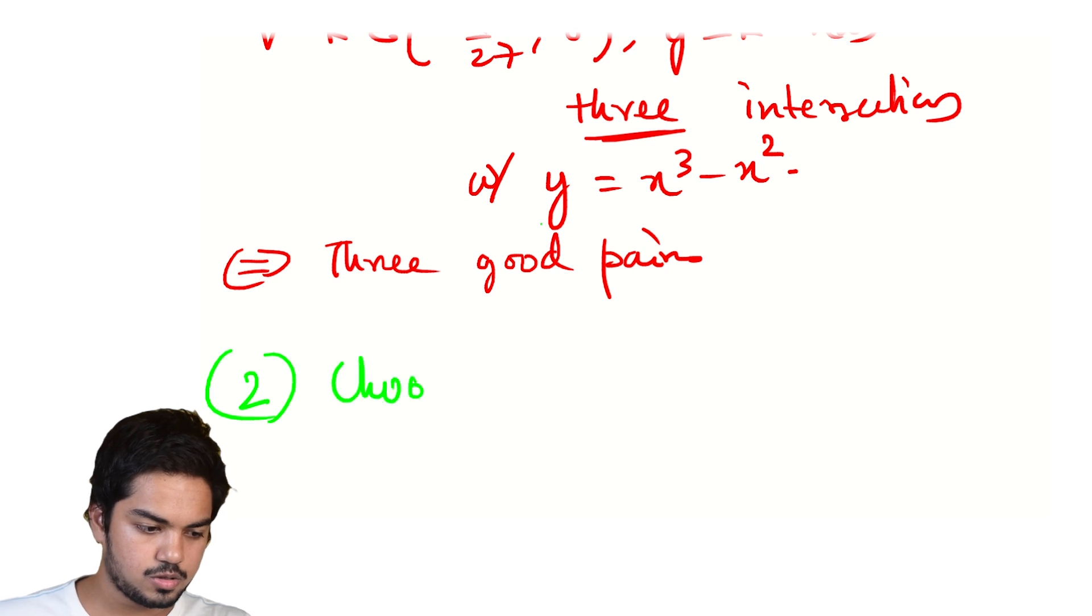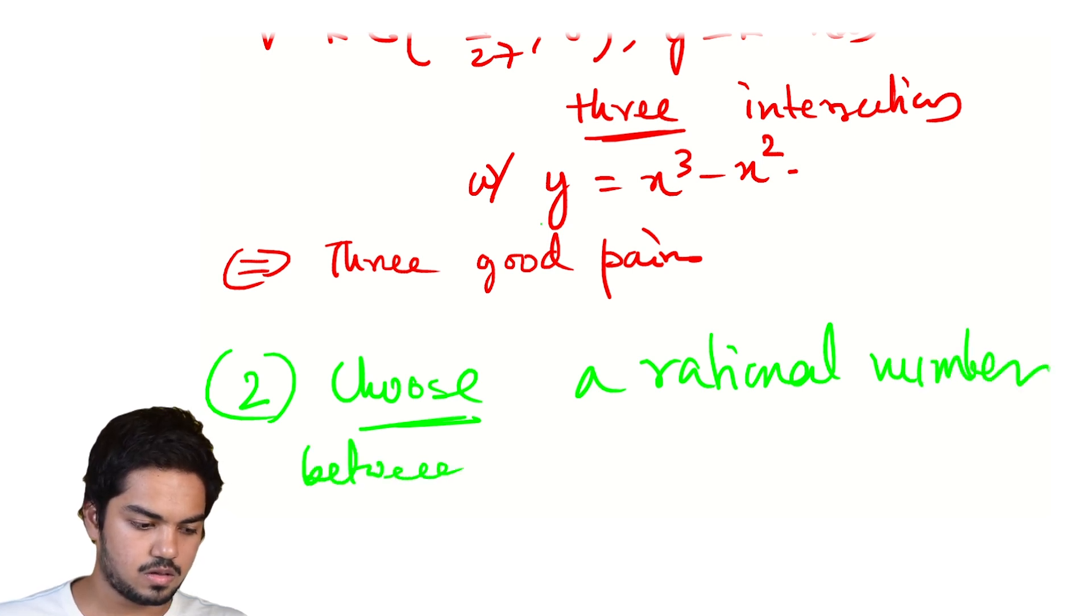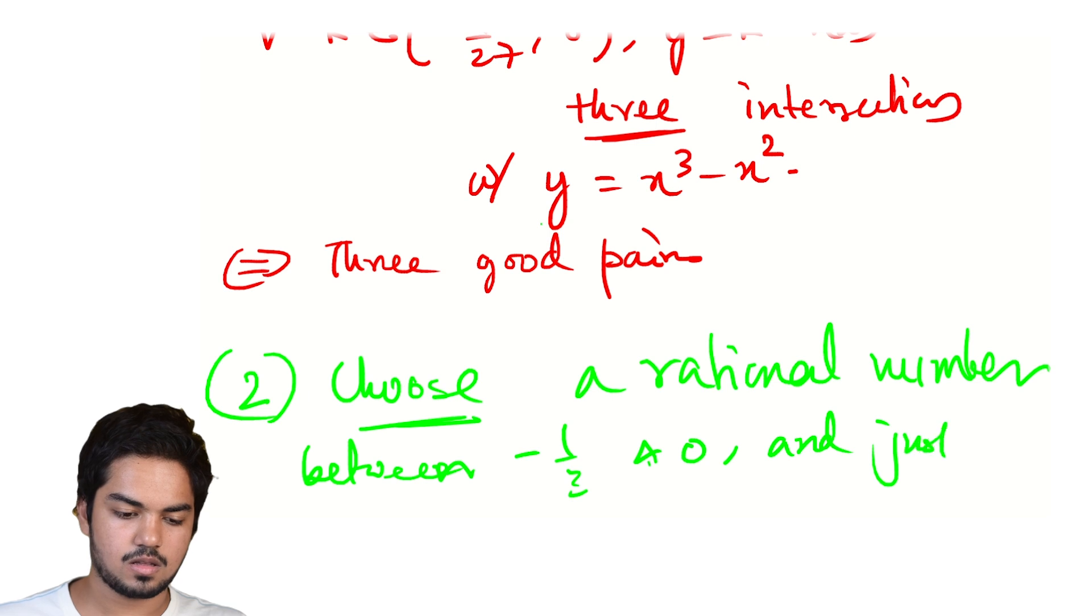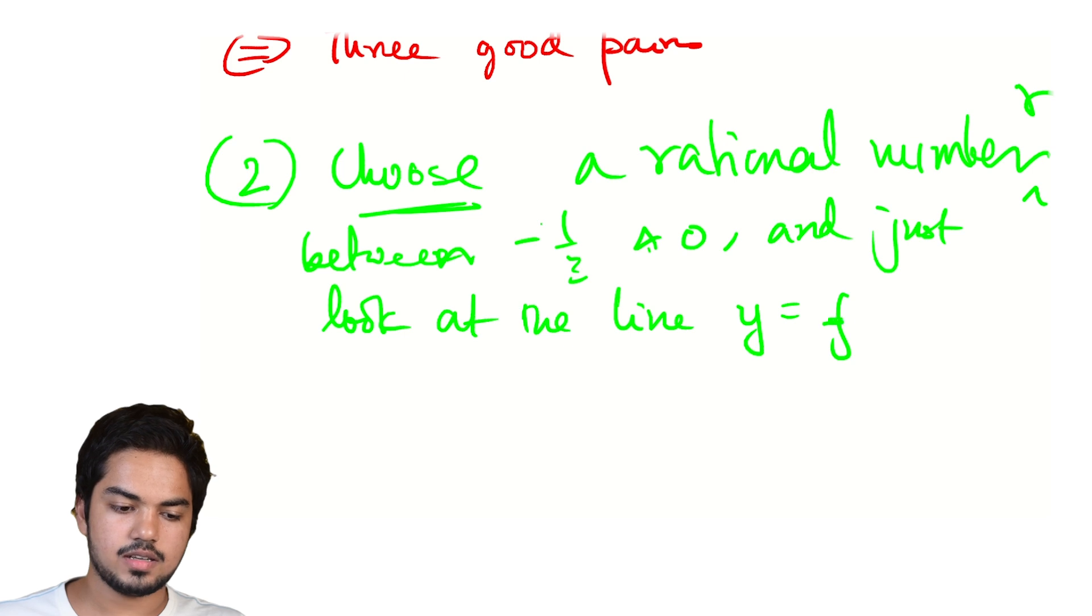So choose a rational number. So for part 2, choose a rational number between -1/3 and 0 and just look at the line,